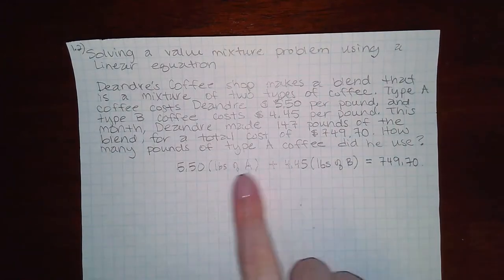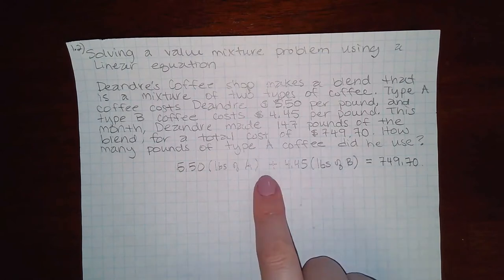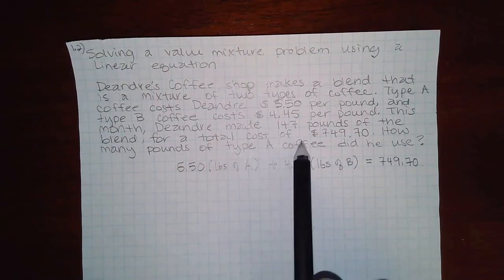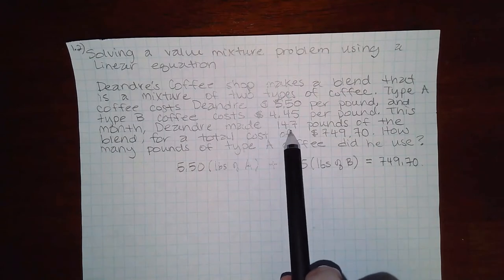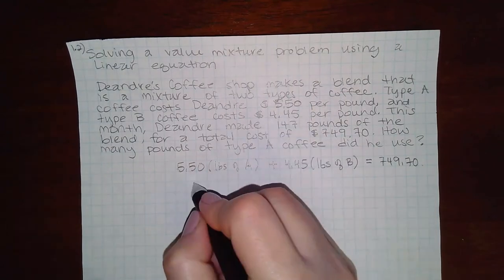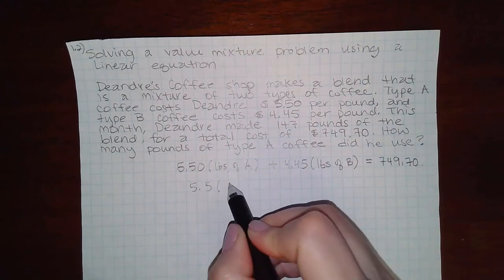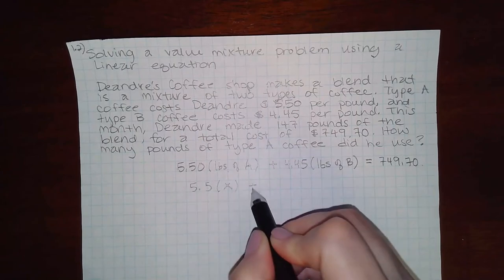The problem is we don't know what to use for this expression. Now, the other information that they gave me was that he made a total of 147 pounds. Which means, if I don't know how much of type A he used, I could just use the letter X.